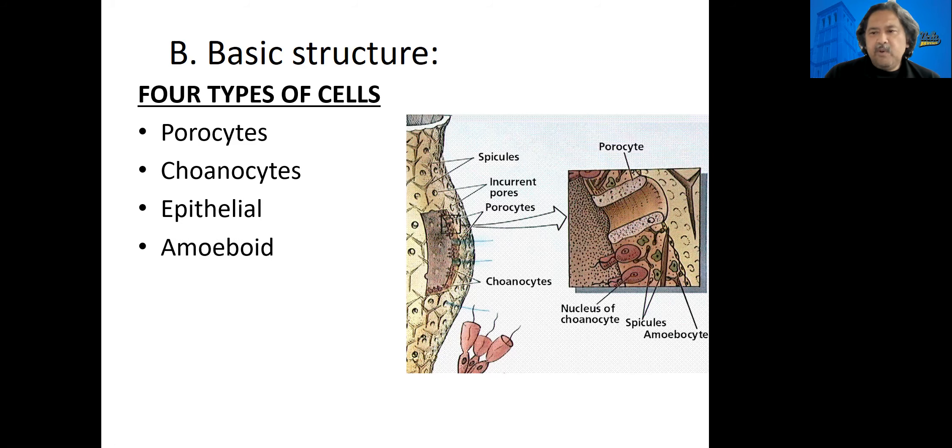And then the amoeboids, those are the green ones in this picture here. The amoeboid cells, what they do is they can move within the body. They go over to the choanocyte, pick up some food, and then deliver it to the other cells, like the epithelial cells and the porocytes.